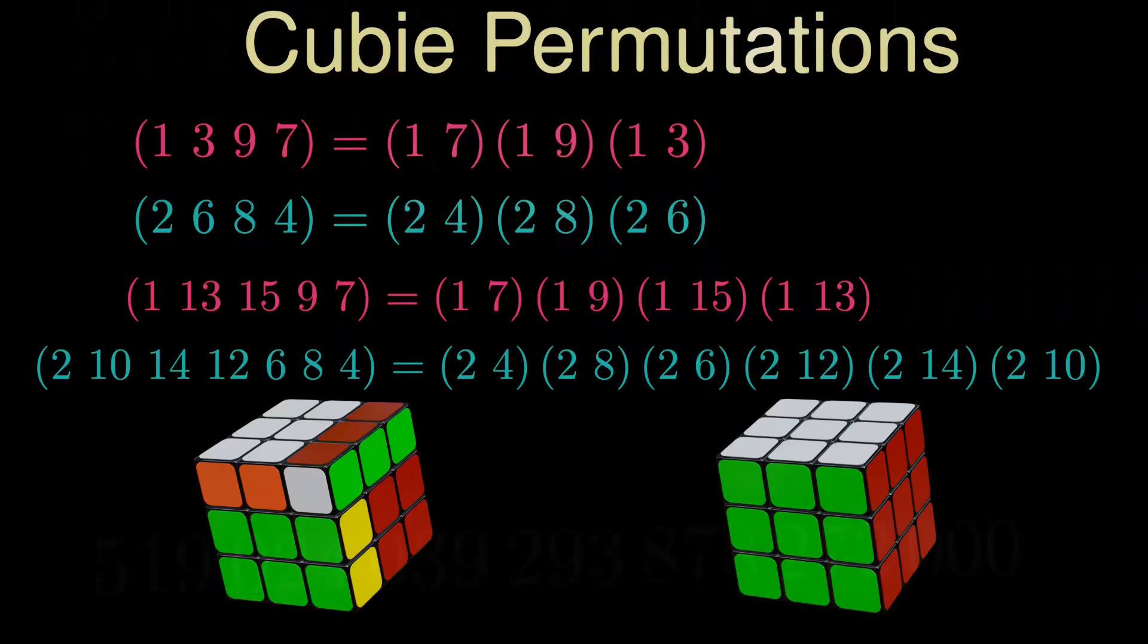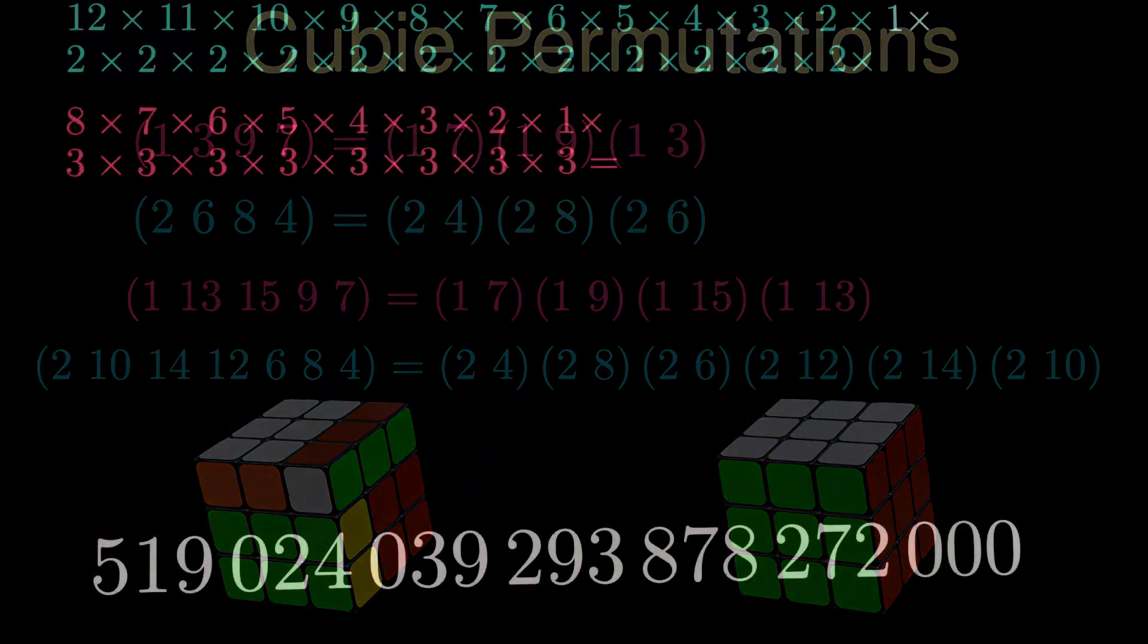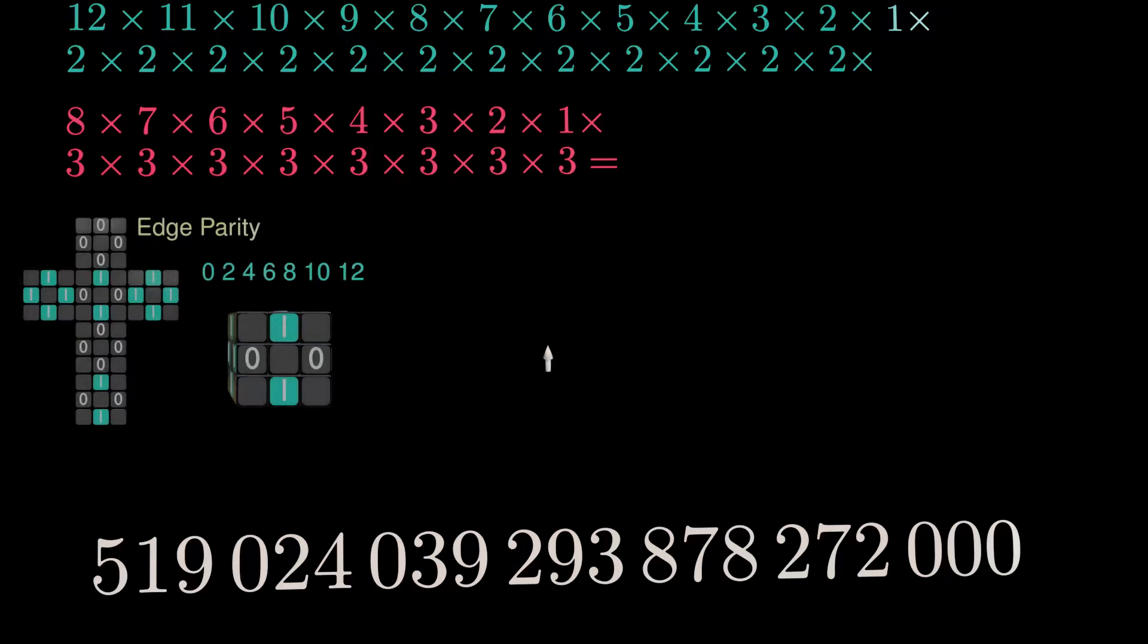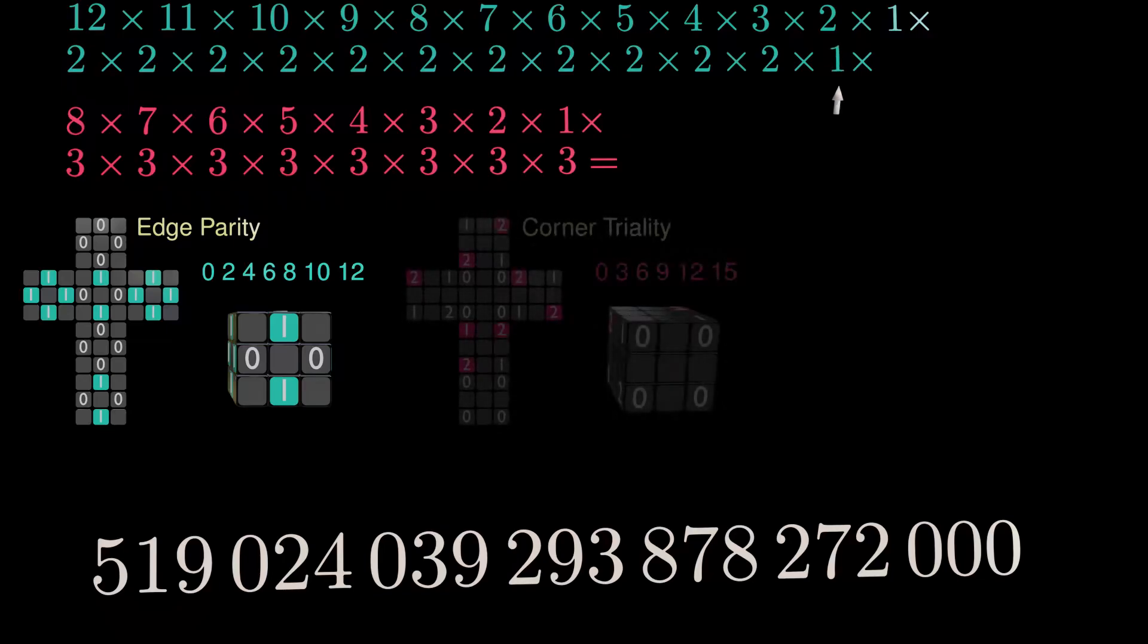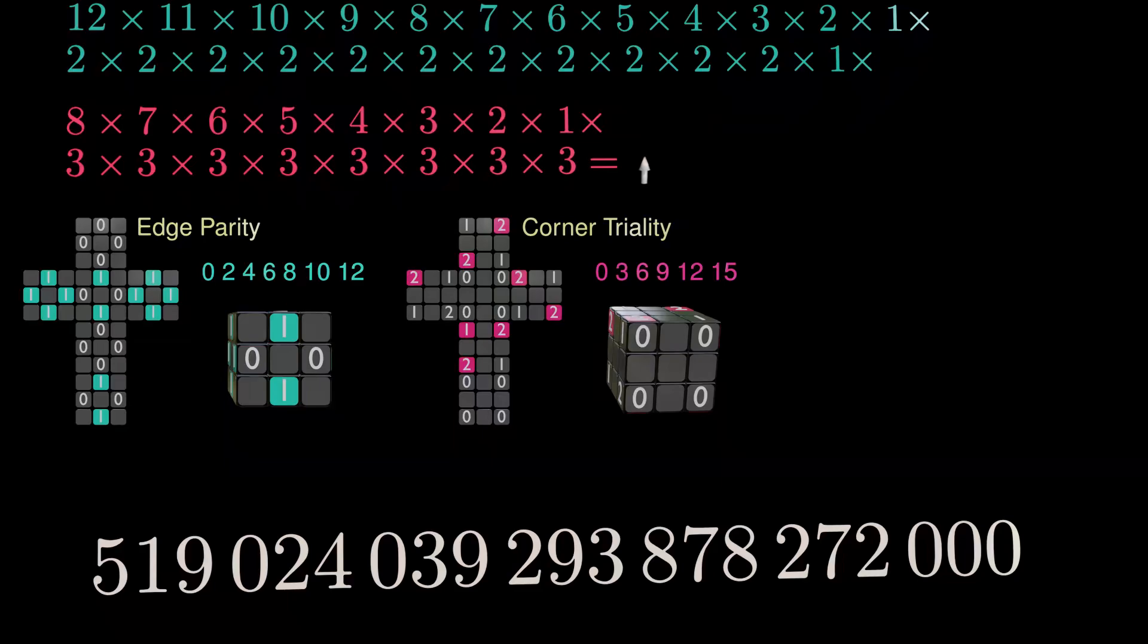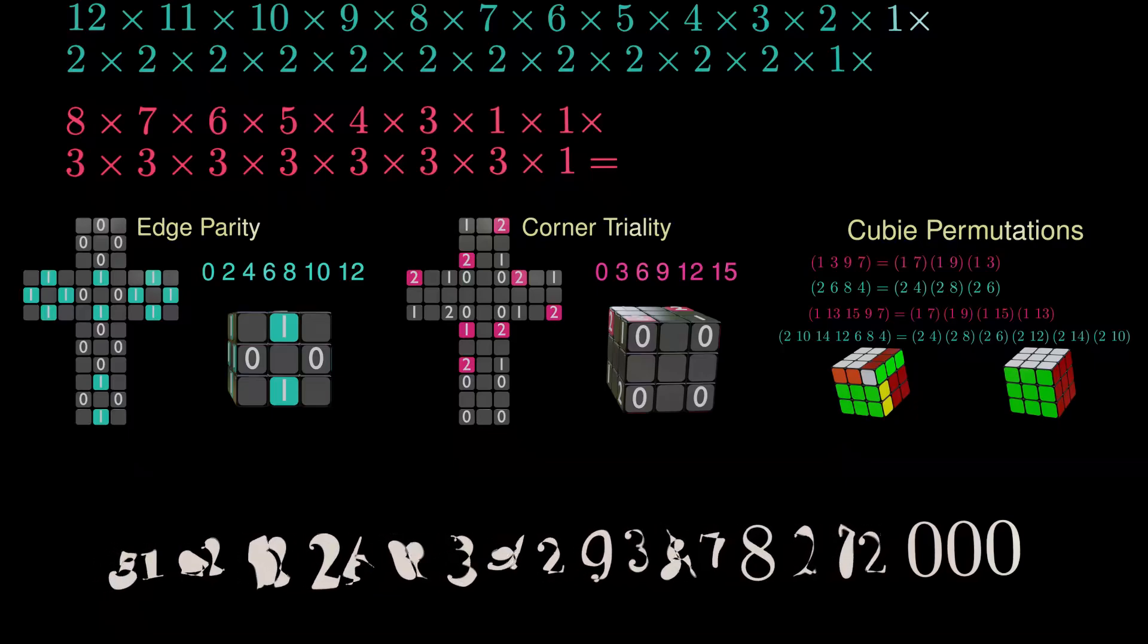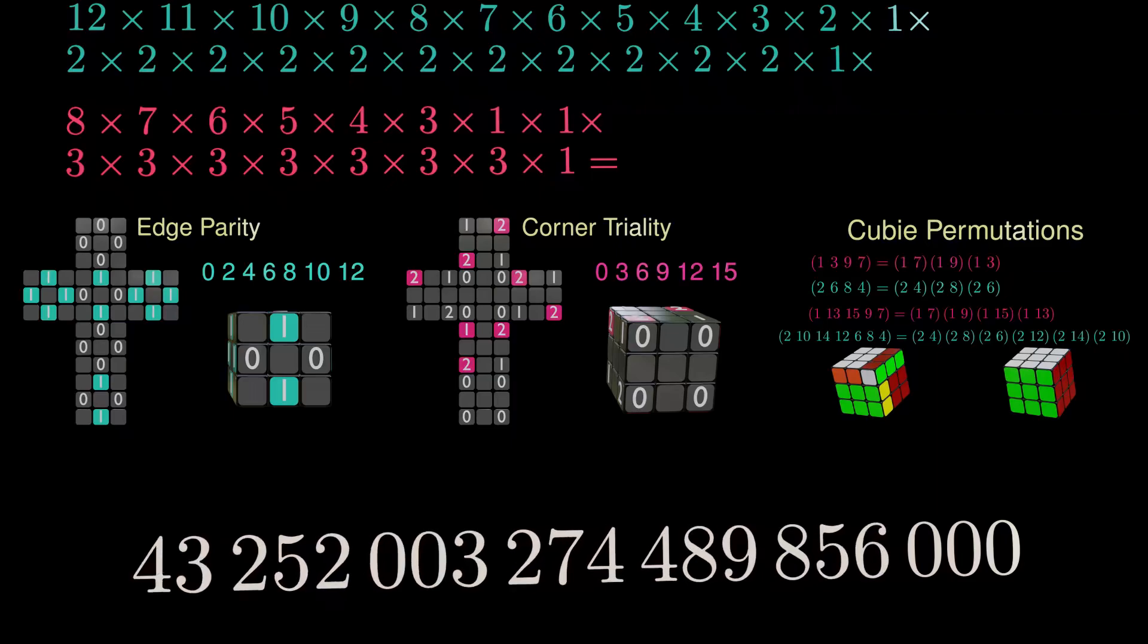Now that we've explored all these constraints, let's go back and update our numbers based on what we've learned. Because of the edge parity constraint, we lose the ability to freely orient the last edge. This eliminates one factor of two from our count. The corner triality constraint forces the orientation of the last corner and eliminates one factor of three. Finally, the edge corner transpositions constraint removes the choice for the position of the second to last corner piece. Taking all these adjustments into account, the number of screwdriver configurations is reduced by a factor of 12, which brings us to the final number of 43 quintillion states.